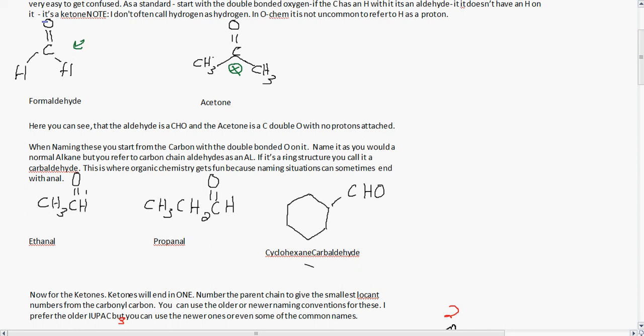When the CHO is attached to the ring, it's a carb aldehyde. When it's a straight chain, you just name it with AL. So here is a two carbon piece, one, two, E-T-H. So ethanal, but you would name it ethanal.